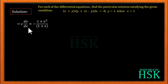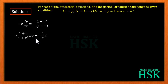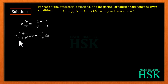Now I separate the variables, taking terms in v on one side and x on the other. By cross multiplication I obtain (1 + v)/(1 + v²) dv = -(1/x) dx. Because the variables are now separated, I can integrate both sides of the equation.